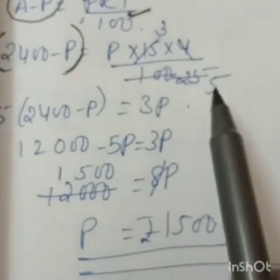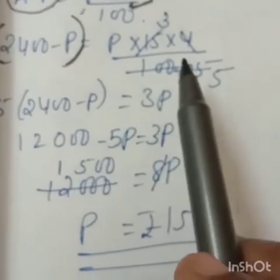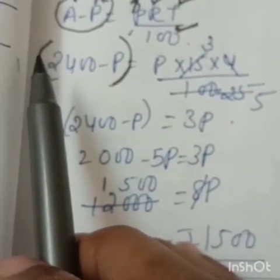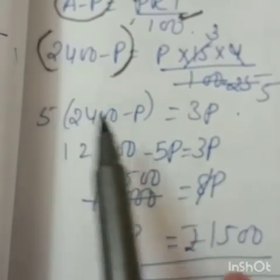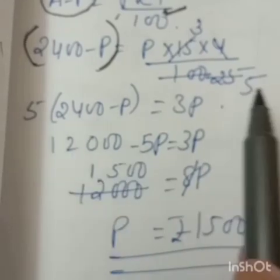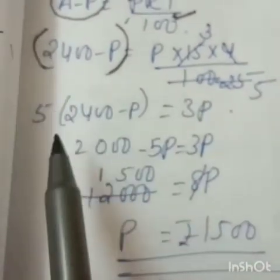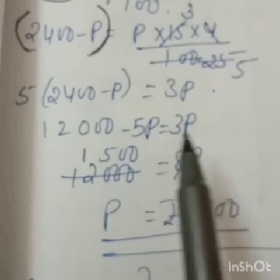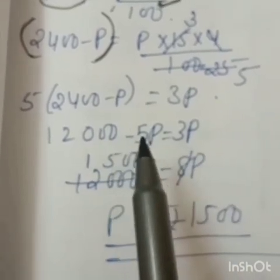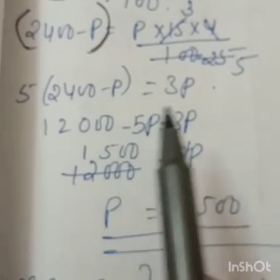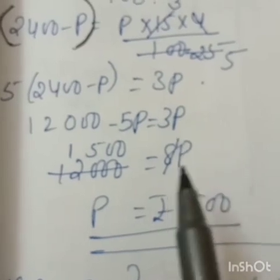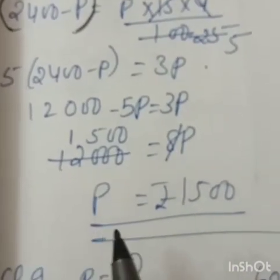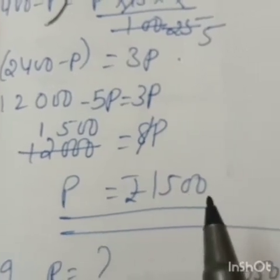After cutting, 5 comes in the denominator. The right-hand denominator number will move to the left-hand numerator side. After cross-multiplying: 5 into 2400, then 5 into P. Minus 5P will move to the right-hand side and become plus 5P. That gives 8P. After cutting, the principle equals Rs. 1500.